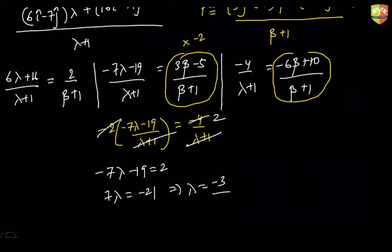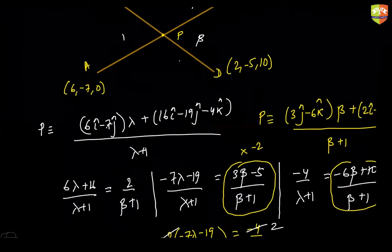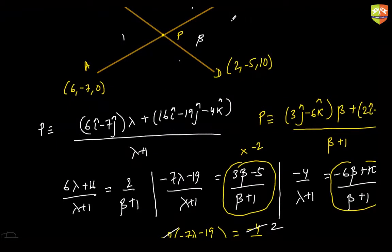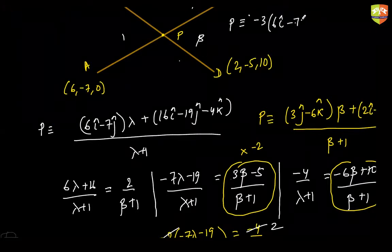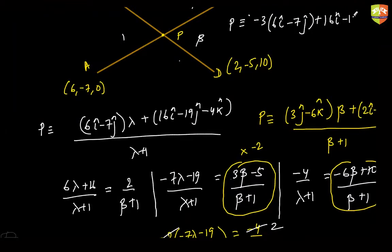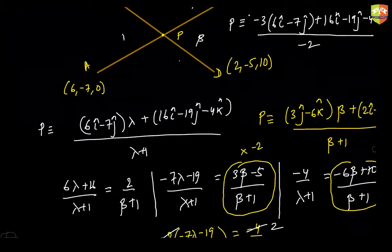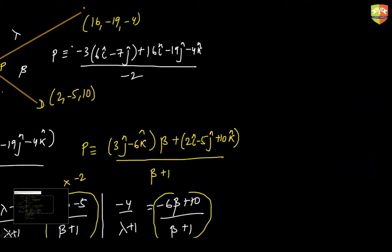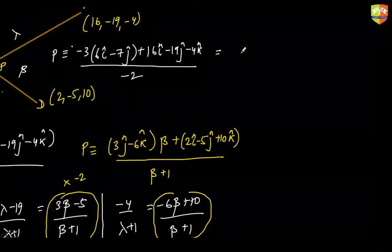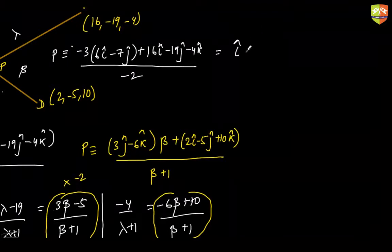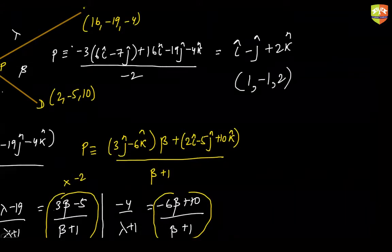With λ = -3, the coordinates of P are: substitute into (-3(6i - 7j) + (16i - 19j - 4k)) / (-3 + 1) = (-2i + 2j - 4k... wait, simplifying: -18 + 16 = -2 for i giving 1; 21 - 19 = 2 for j giving -1; and +2k giving 2. So P = (1, -1, 2).